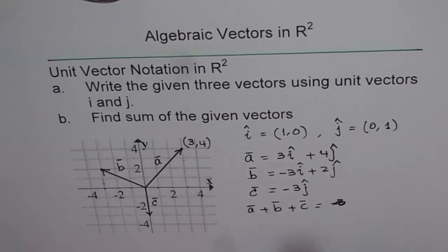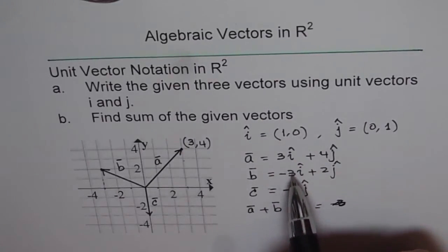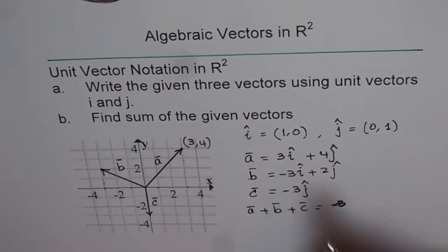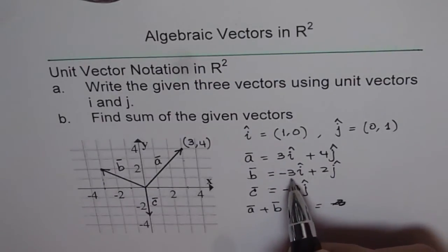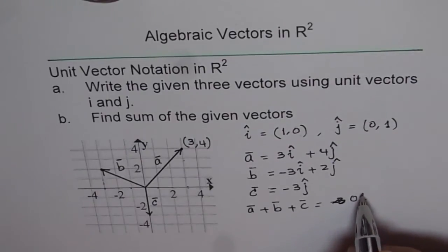So let me just rewrite. So basically what we have here is, as far as the i components are concerned, it is 3 and minus 3. So we get 0 along the i component. So we get nothing along the i component. So let me write 0i first.